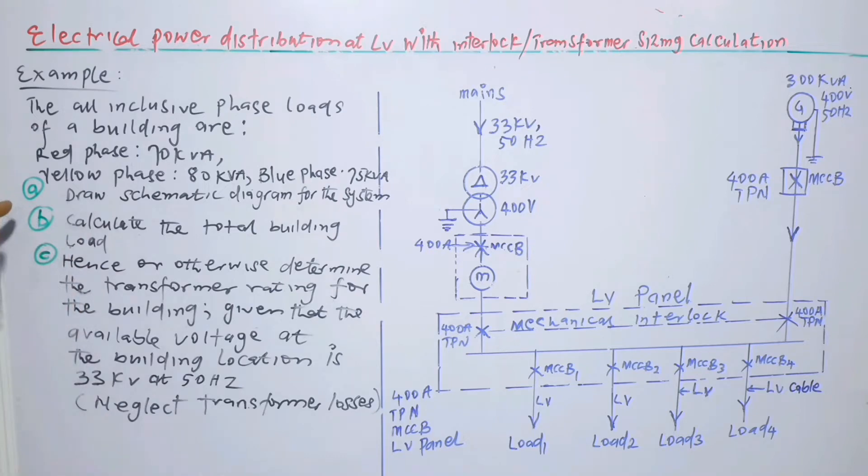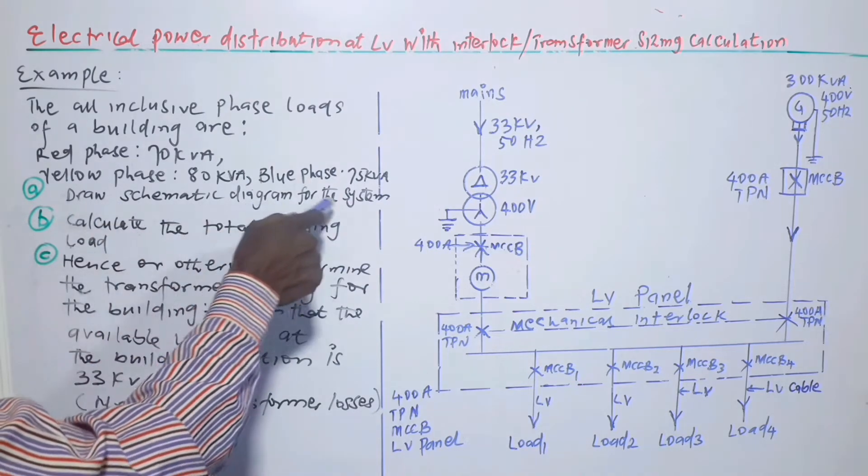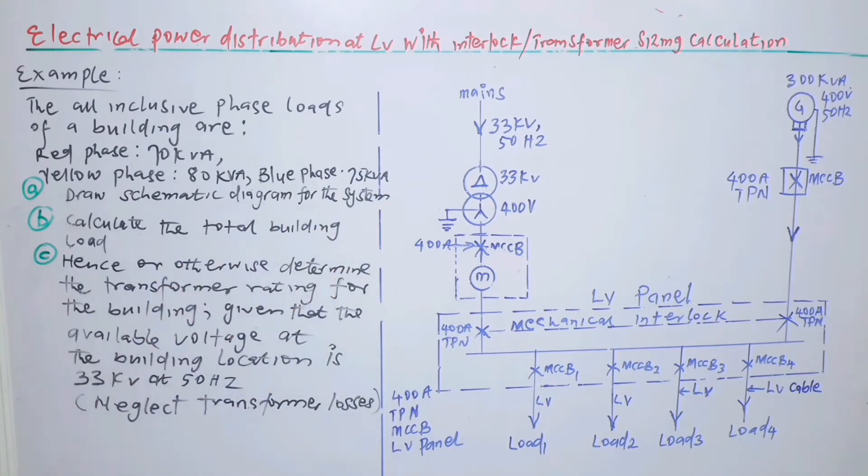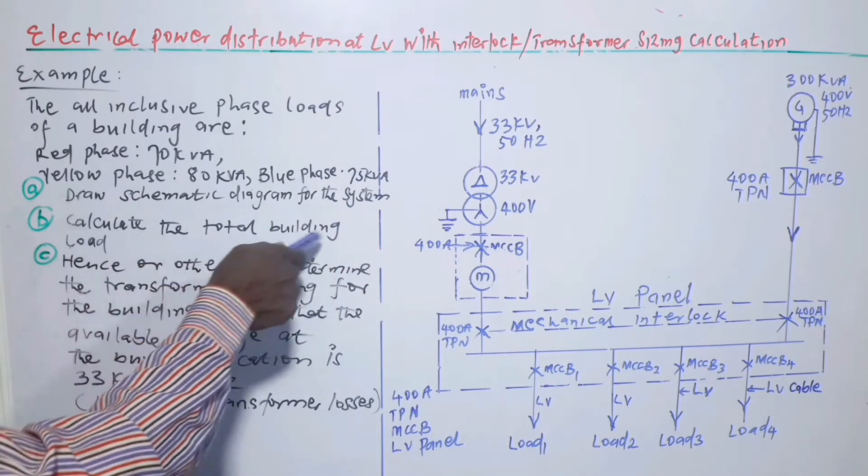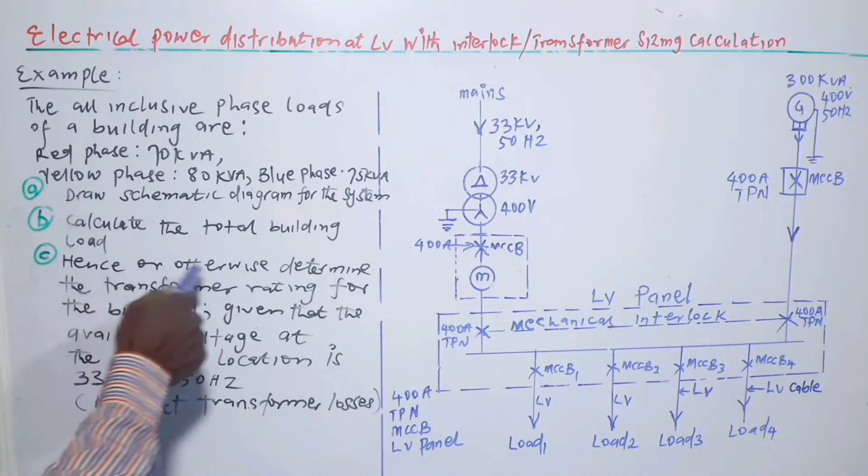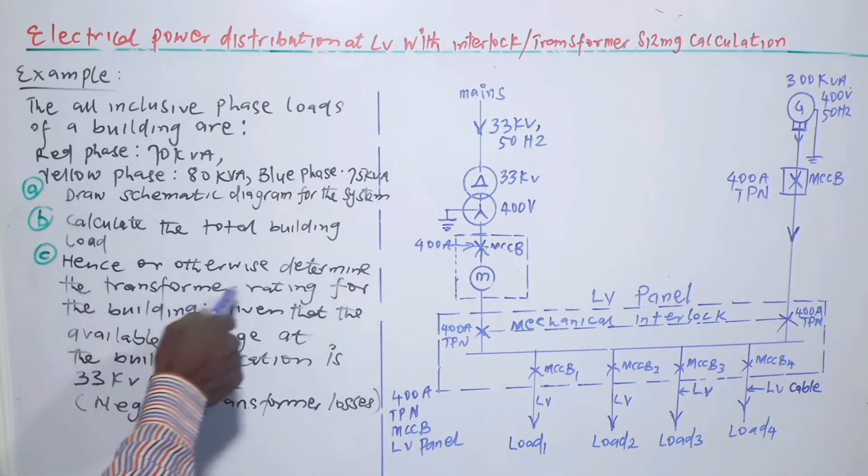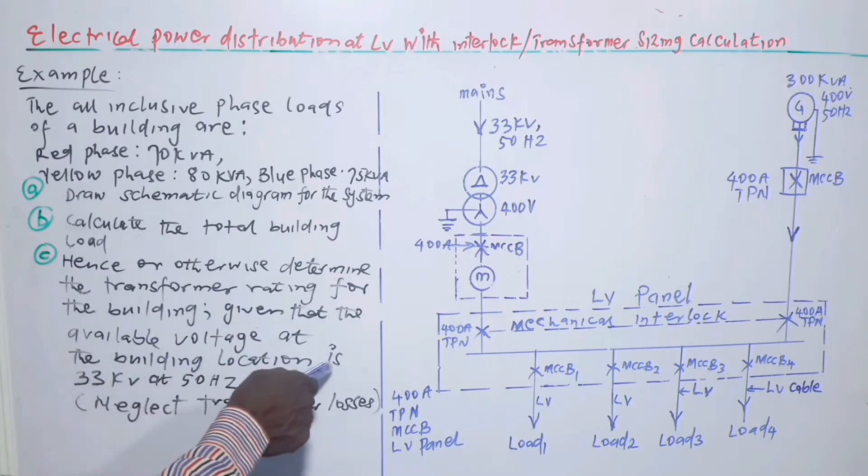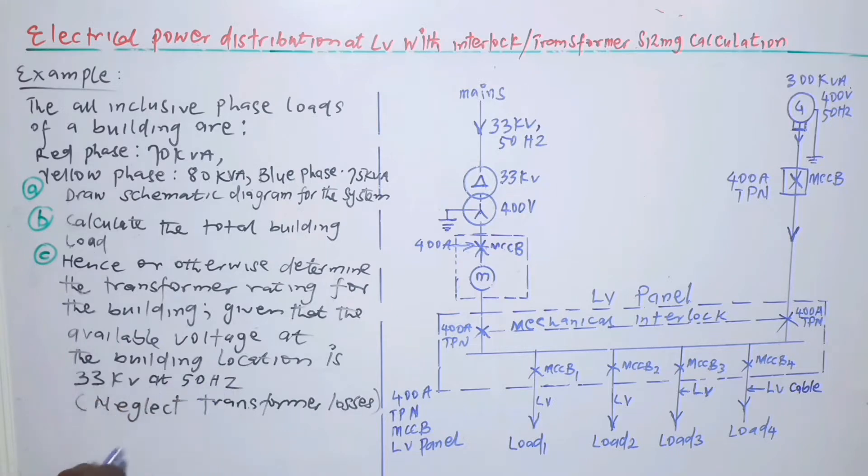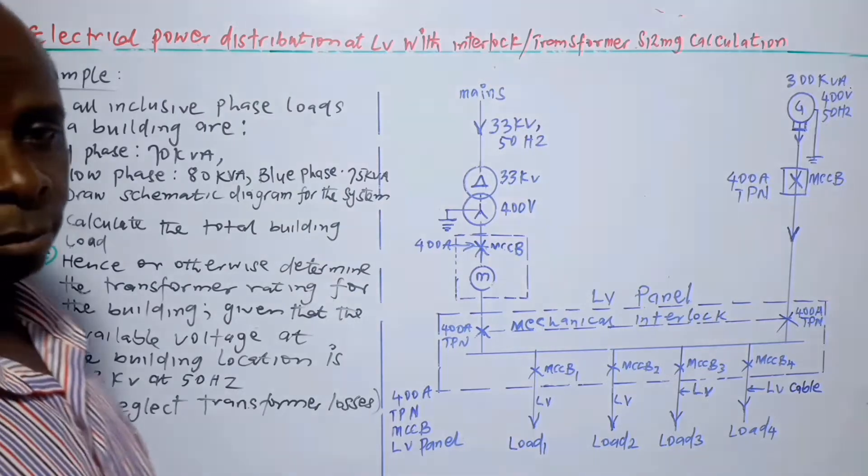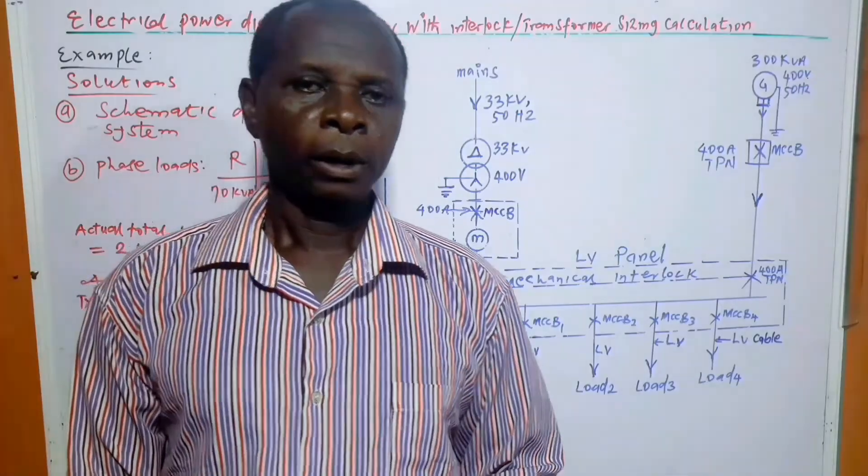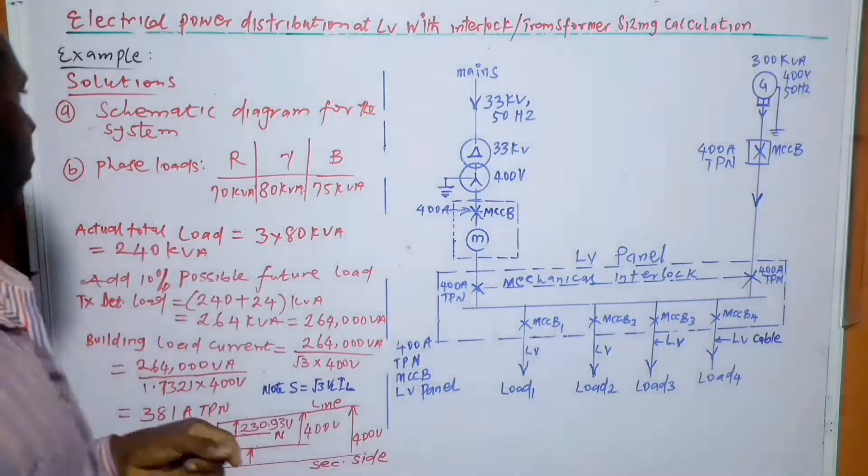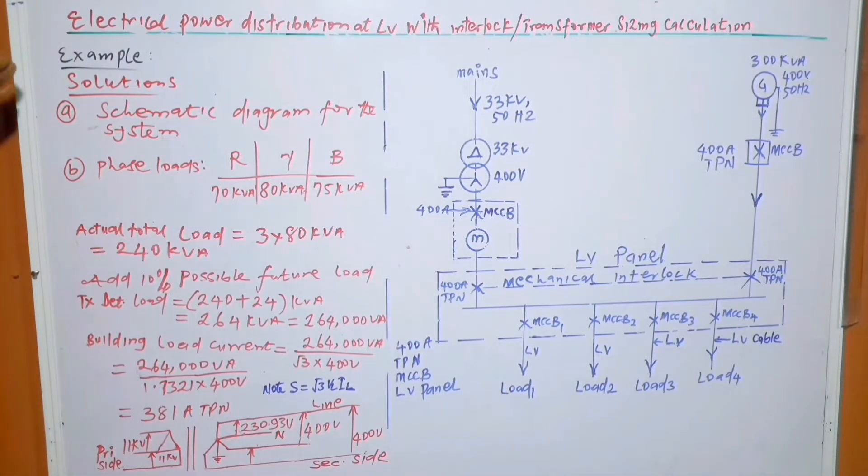Then part A of the question is: draw schematic diagram for the system. B: calculate the total building load. C: hence or otherwise determine the transformer rating for the building, given that the available voltage at the building location is 33 kV at 50 Hz. Neglect transformer losses.